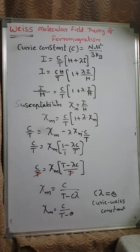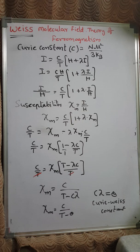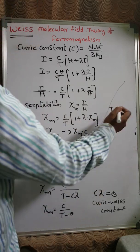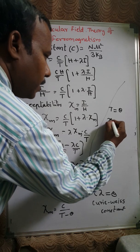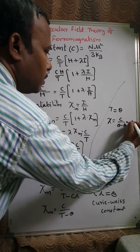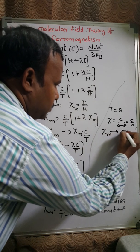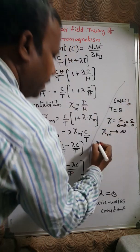We now consider three cases based on the term (T − θ). Case 1: when T equals θ (the Curie-Weiss constant), χ_m becomes C/(θ − θ) = C/0, which tends to infinity. This means the material is ready to attain external magnetization.